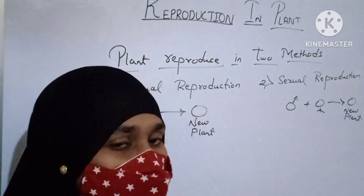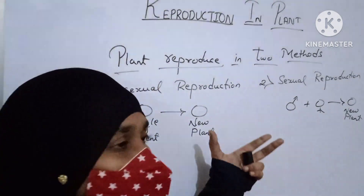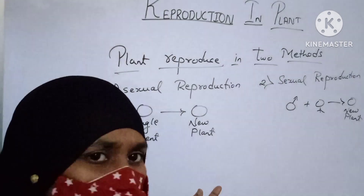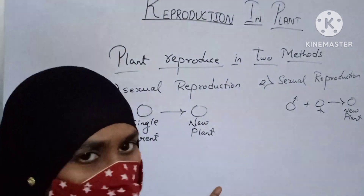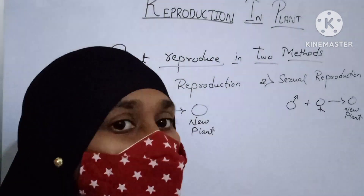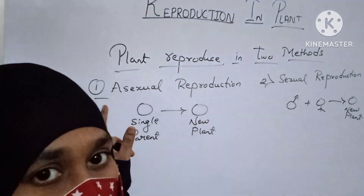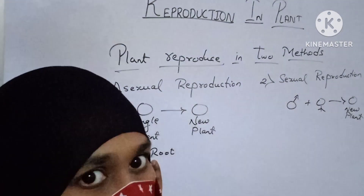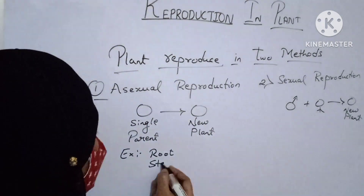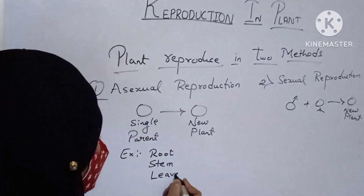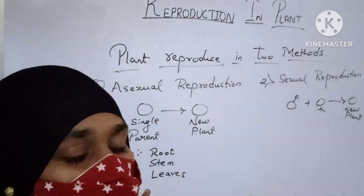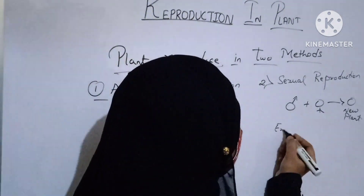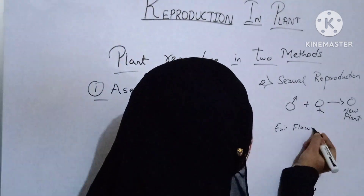In a plant, there are different parts and each has a different function in reproduction. In which parts does asexual reproduction take place? The different parts of a plant are root, stem, leaf, and flowers. Asexual reproduction can occur in the root, in the stem, and in the leaves. We can also see asexual reproduction occurring in flowers.